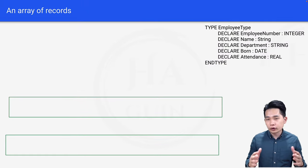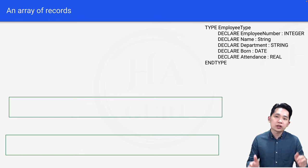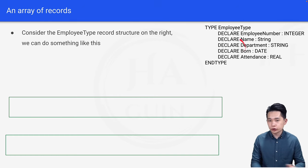Lastly, let's look at an array of records. So what is an array of records? It means that instead of elements, we are putting records inside the array. Considering the EmployeeType record structure on the right here, we can actually do something like this in order to put all the records into the array.